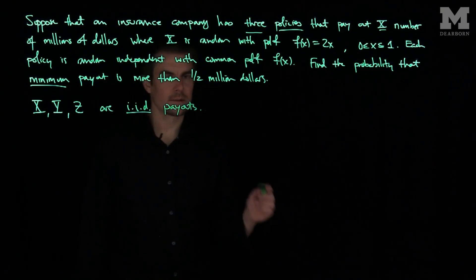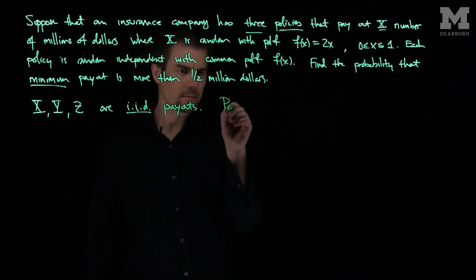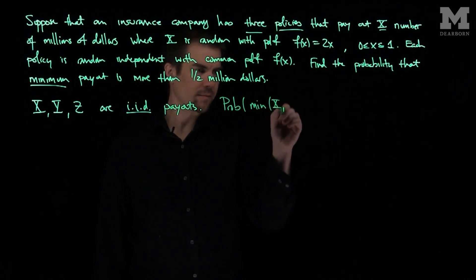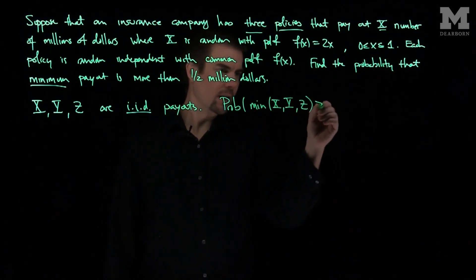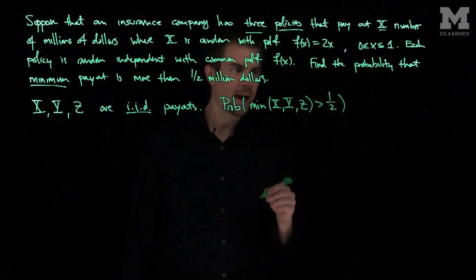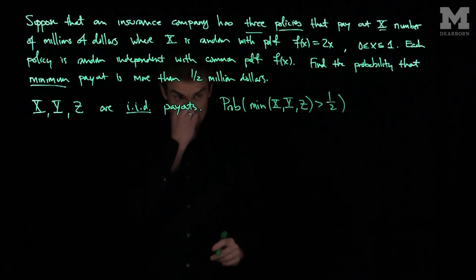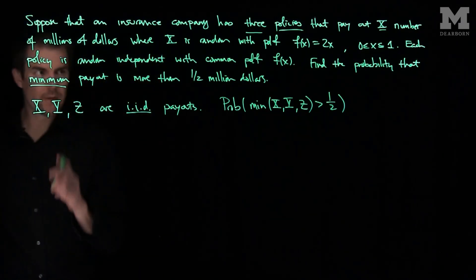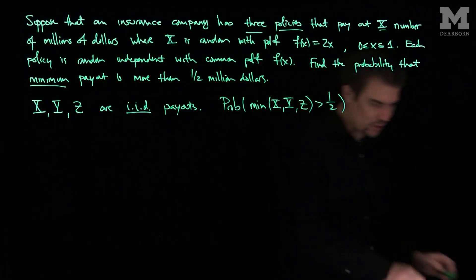And we want the probability that the minimum of X, Y, and Z is bigger than one-half. So this is the probability we're after finding. And so what we'll do is we'll consider a more general problem.